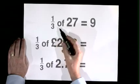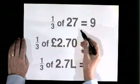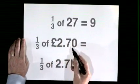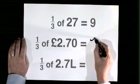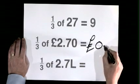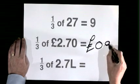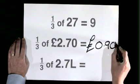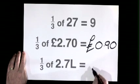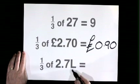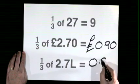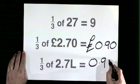One third of twenty seven is nine. One third of two pounds seventy is ninety p. One third of two point seven litres is zero point nine litres.